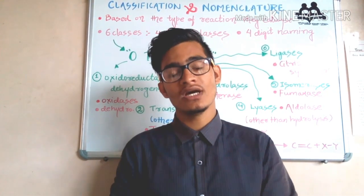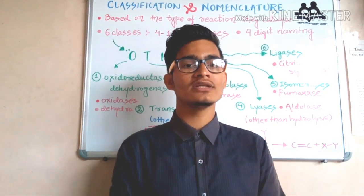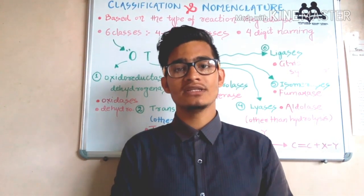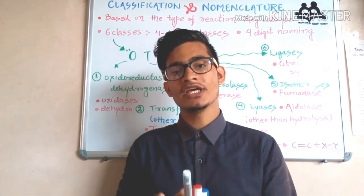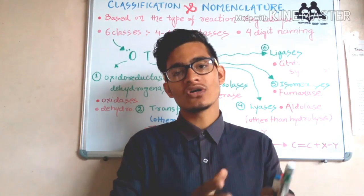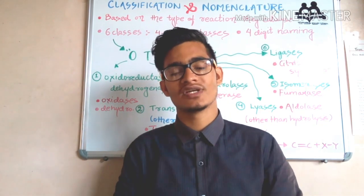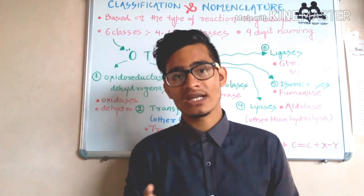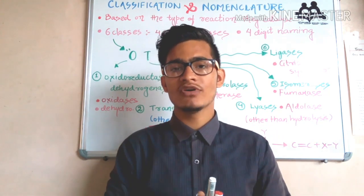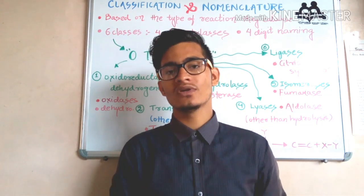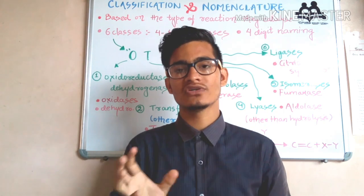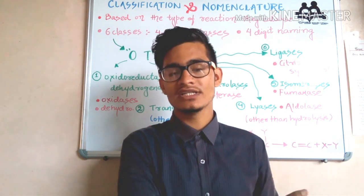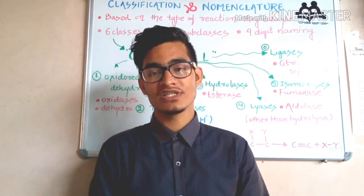First, let's talk about what you mean by classification and what you mean by nomenclature. When we studied taxonomy or systematics in 'The Living World,' which is the first chapter of NCERT Class 11, we talked about the placement of different kinds of organisms based on similarity and differences into some sort of categories — that is known as classification. Similarly, the same kinds of enzymes are placed in different classes. Nomenclature simply means the naming of particular enzymes based on some characters or based on what they are doing.